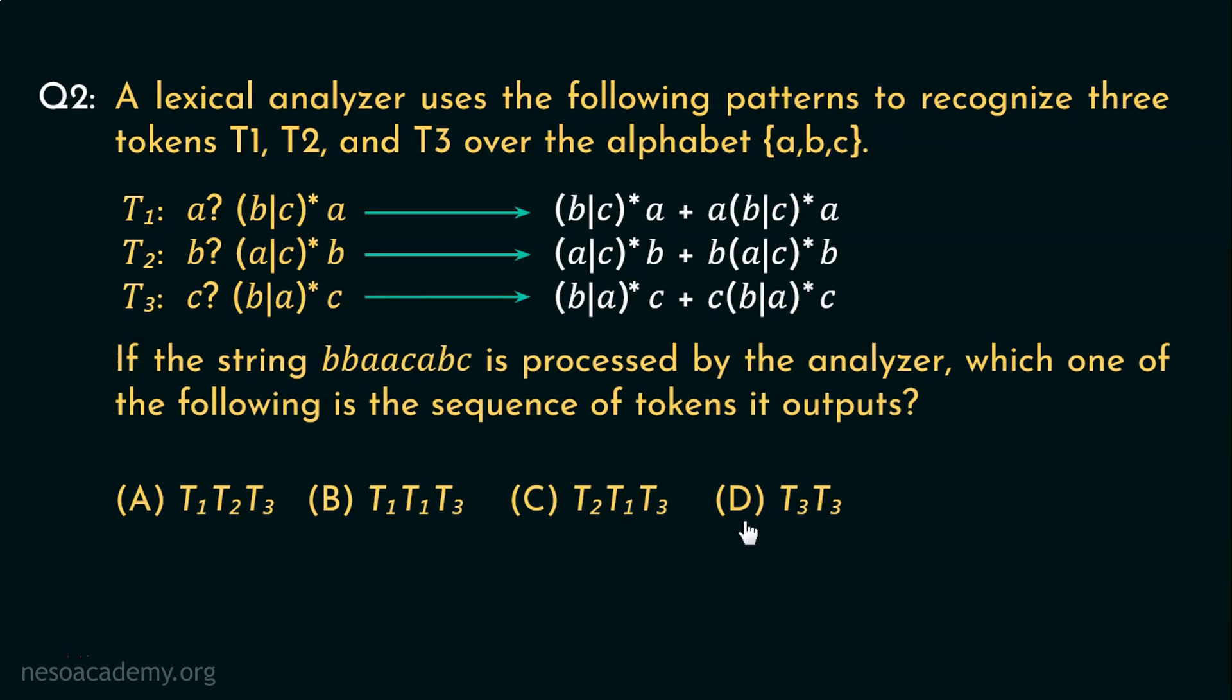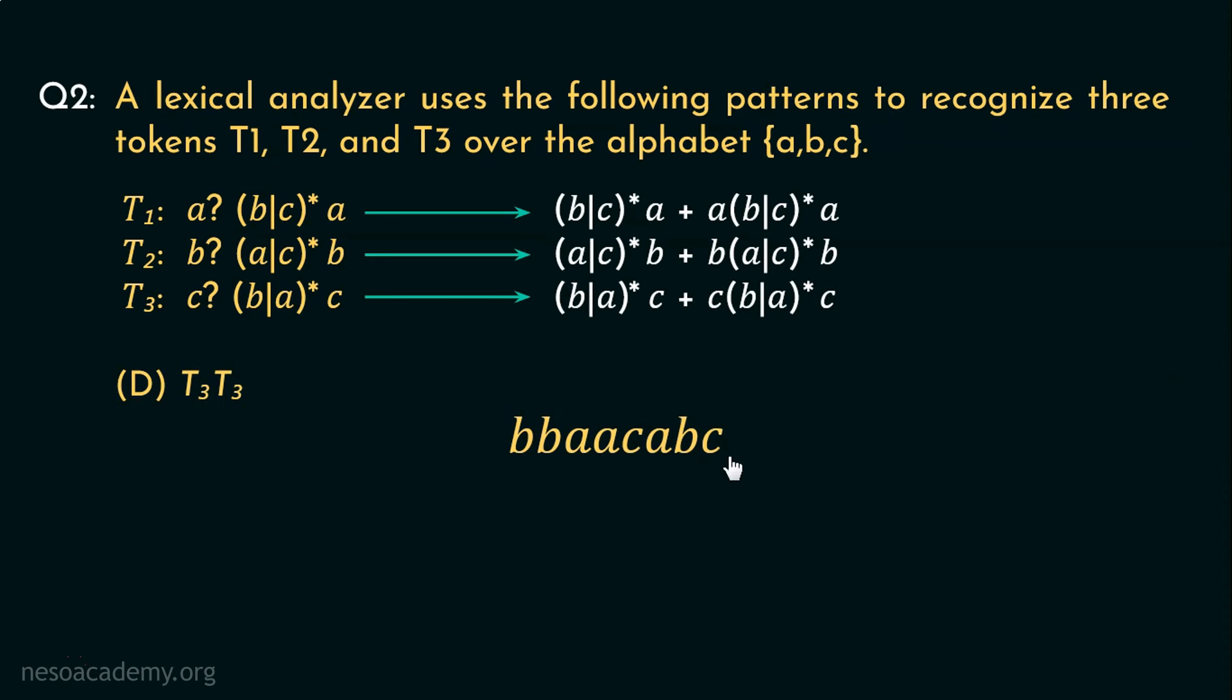Now option D says T3, T3. Let's observe the string for that one as well. If we consider first T3, observe the string, it is beginning with B, so clearly this regex portion will represent BBAAC. That is, two consecutive B's followed by two consecutive A's will be generated by this (B or A) whole star. And this C will generate the C at the end of that.